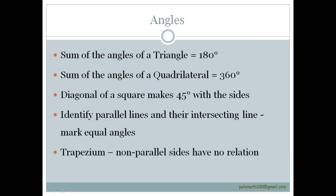Next, coming to angles. Sum of the angles of a triangle is 180 degrees. Sum of the angles in a quadrilateral is 360 degrees.